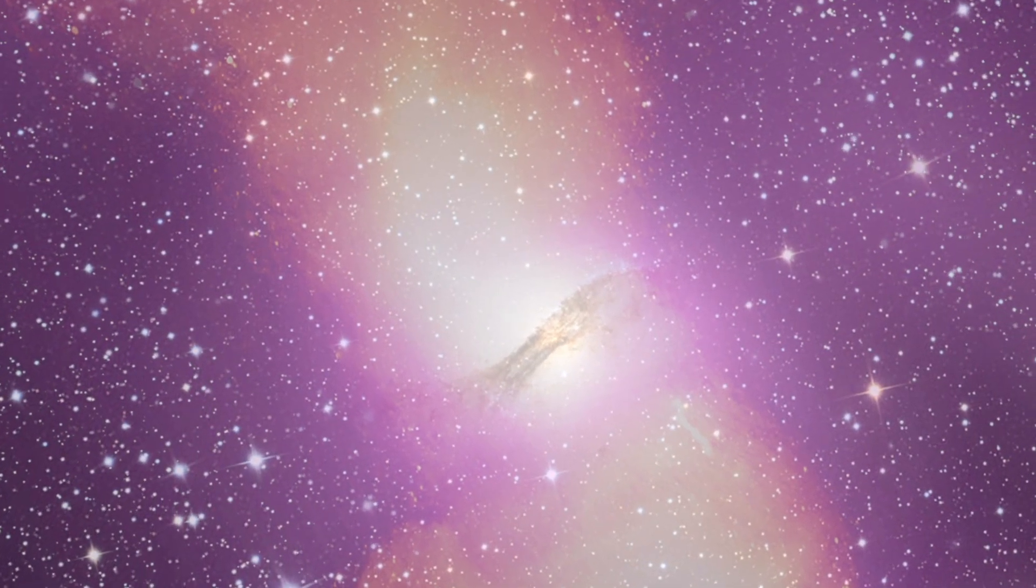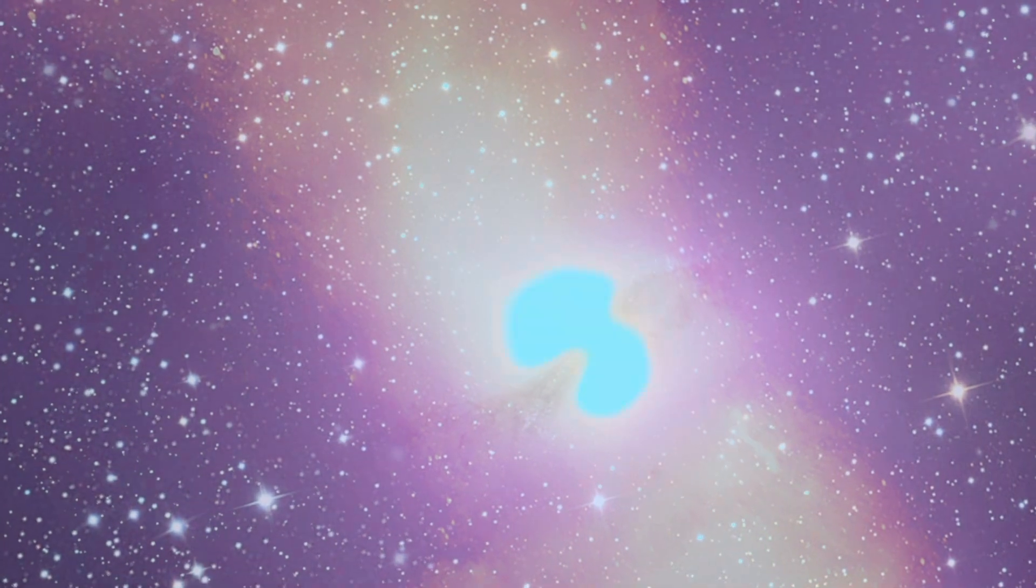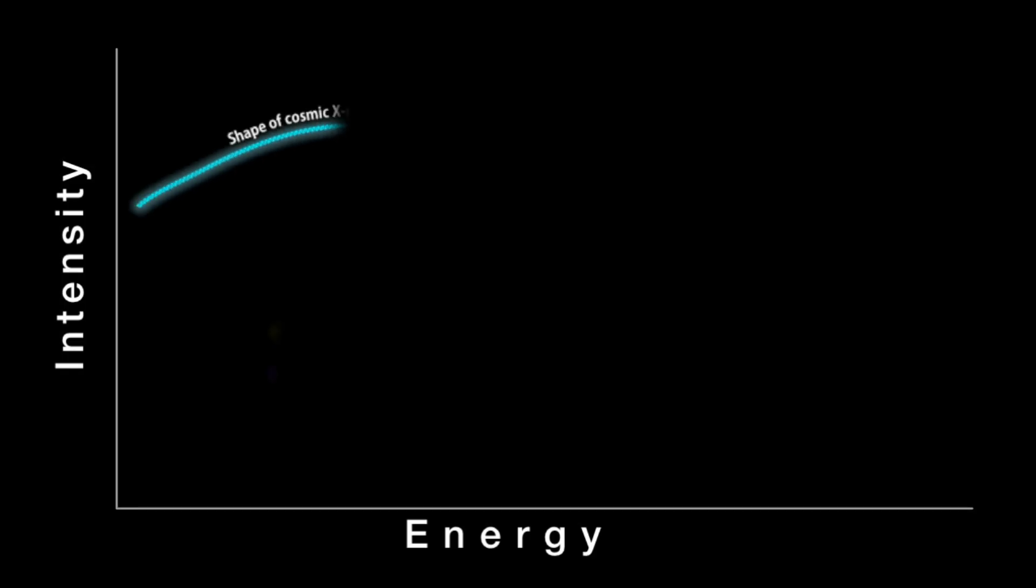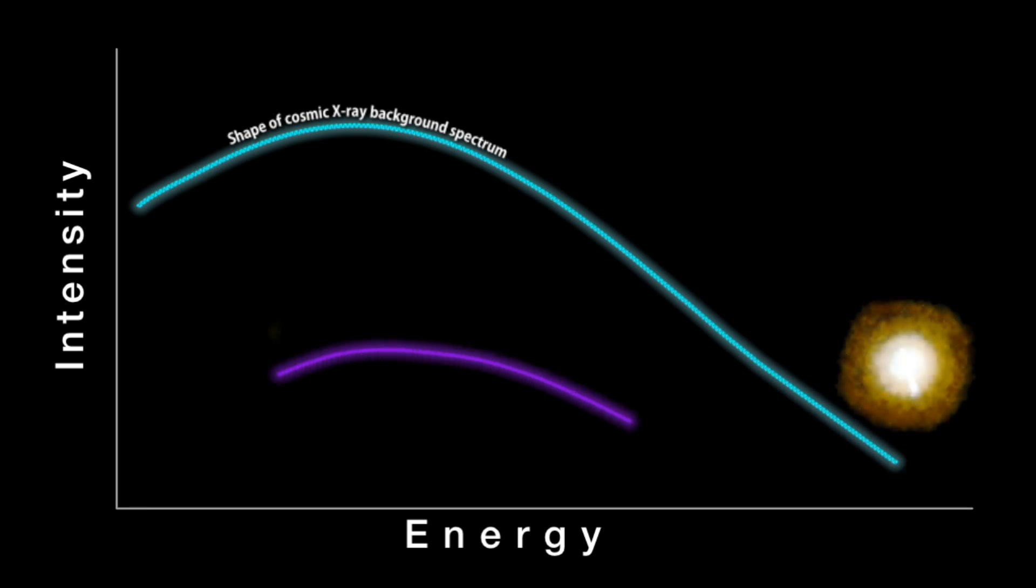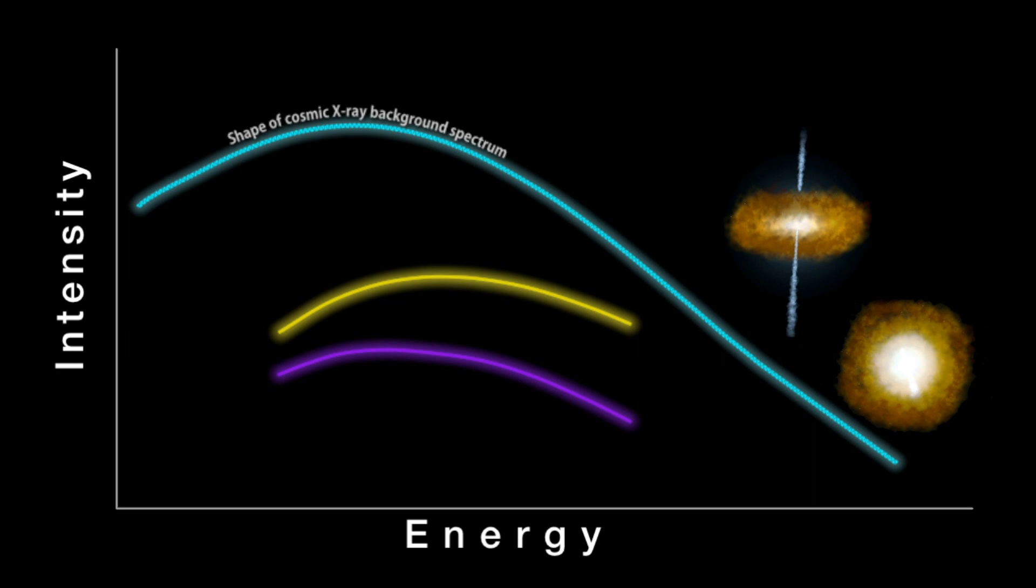At these energies, the sky glows in every direction, even far away from bright sources. Astronomers have long suspected that active supermassive black holes in galaxies were responsible, but they just couldn't find enough of them to account for the X-ray glow, especially the peak of the energy spectrum.